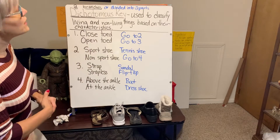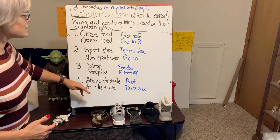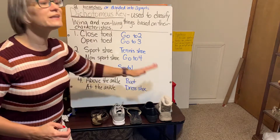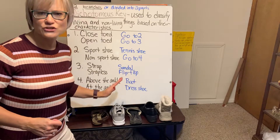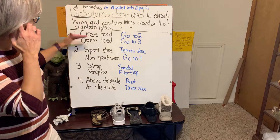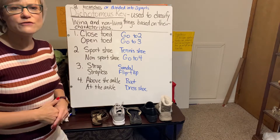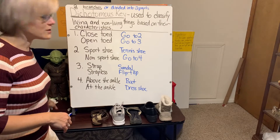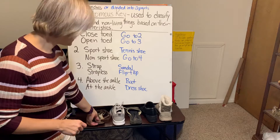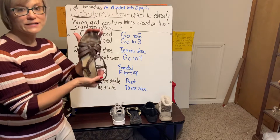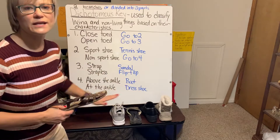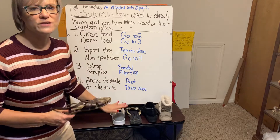We're going to use Mrs. V's shoes. I have a dichotomous key written based on different characteristics of these shoes. I'm going to take each shoe through the dichotomous key to classify it. I'll start with my sandal — and remember, always start at the beginning every single time you start with a different item.